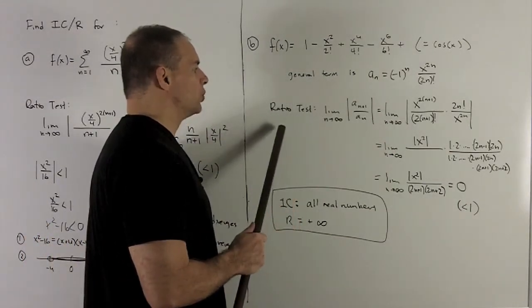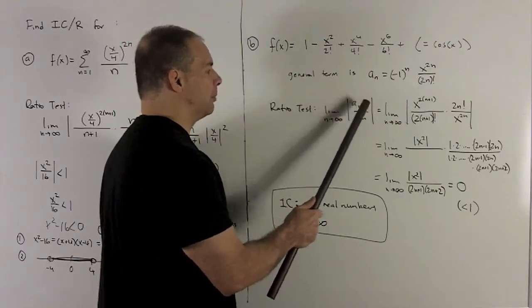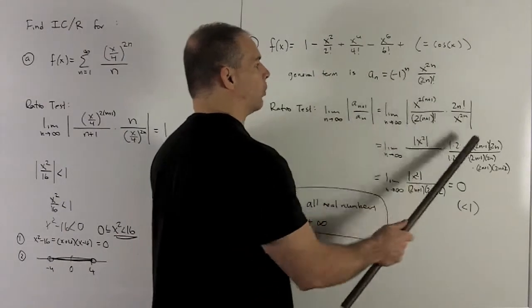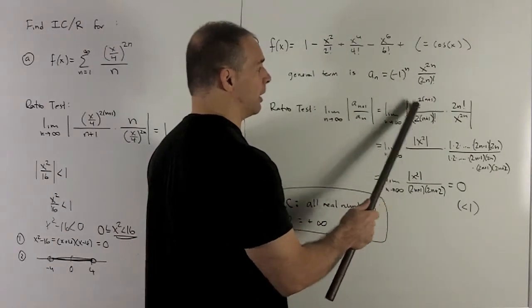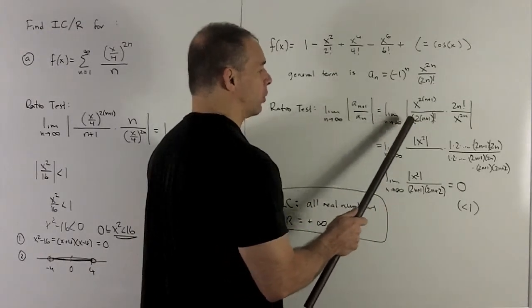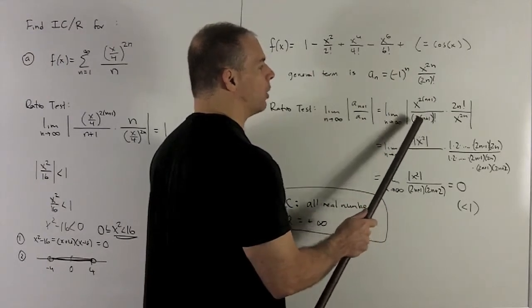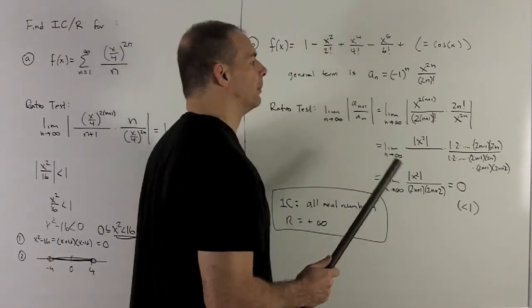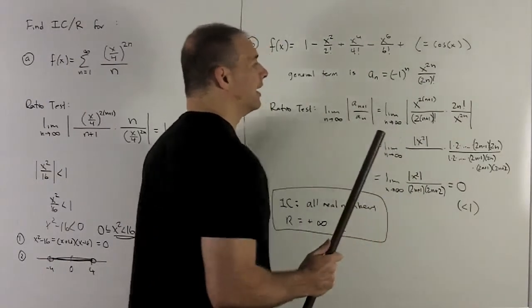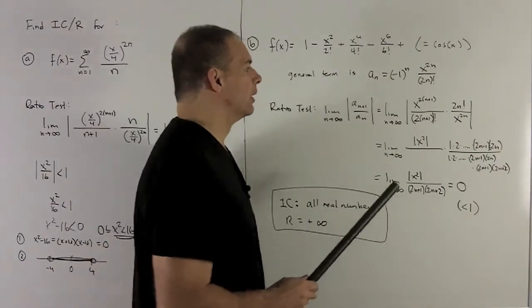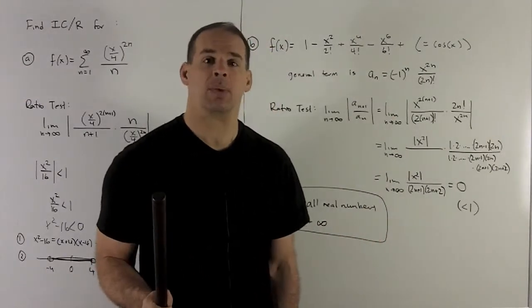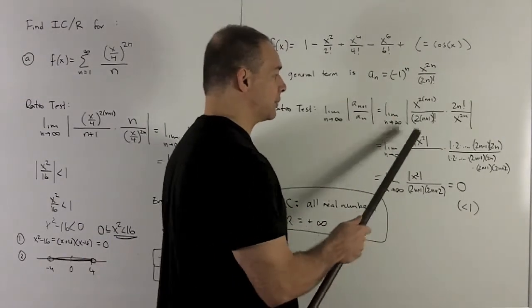We're going to apply the ratio test as usual. Limit n going to infinity, an plus 1 over an. That's going to be limit n going to infinity. We're going to have x wherever I have n, I put an n plus 1. So I get x to the 2n plus 1, which is going to be 2n plus 2. Then we're looking at 2n plus 1 factorial, which is 2n plus 2 factorial. We take our general term and flip it over. That's going to give you 2n factorial over x to the 2n. And then I can start cleaning up. The x to the 2n plus 2 and the x to the 2n going to cancel, leaving me with an x squared in absolute value signs.